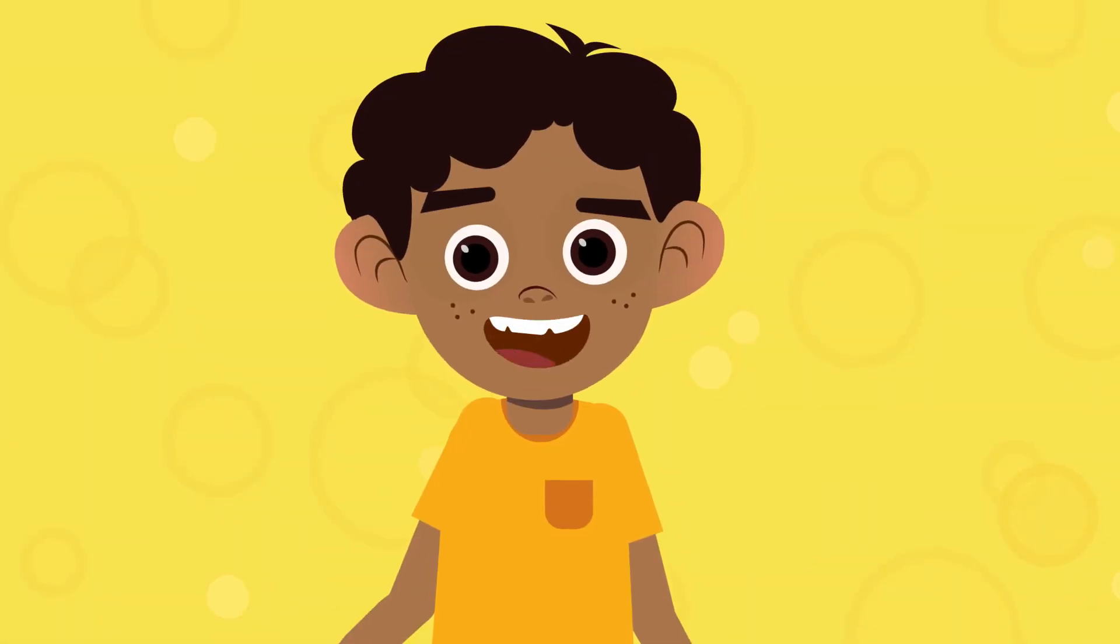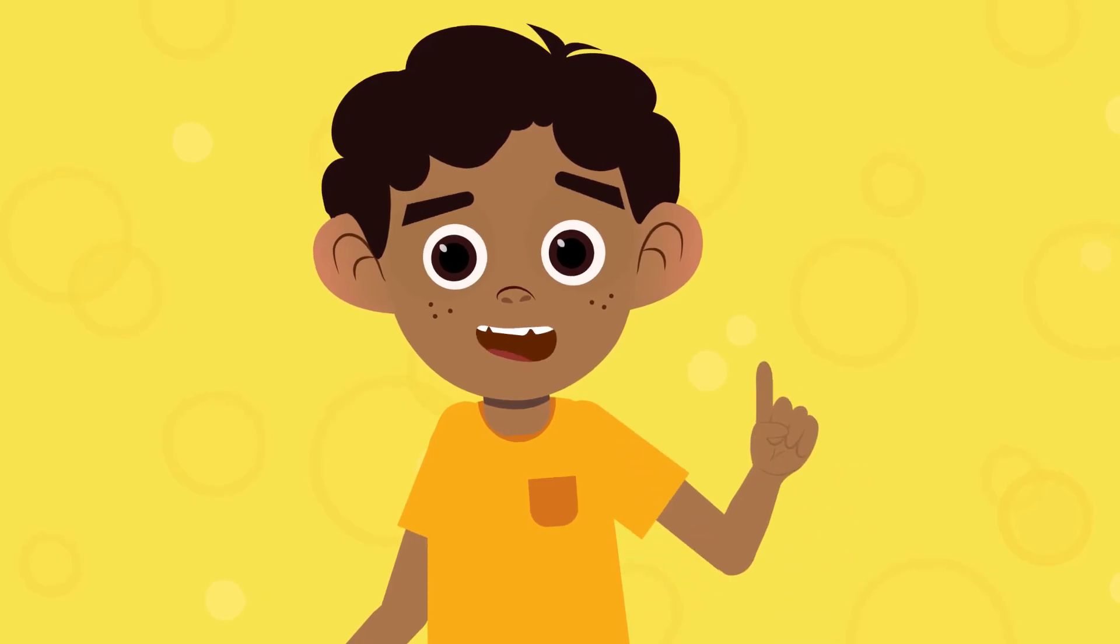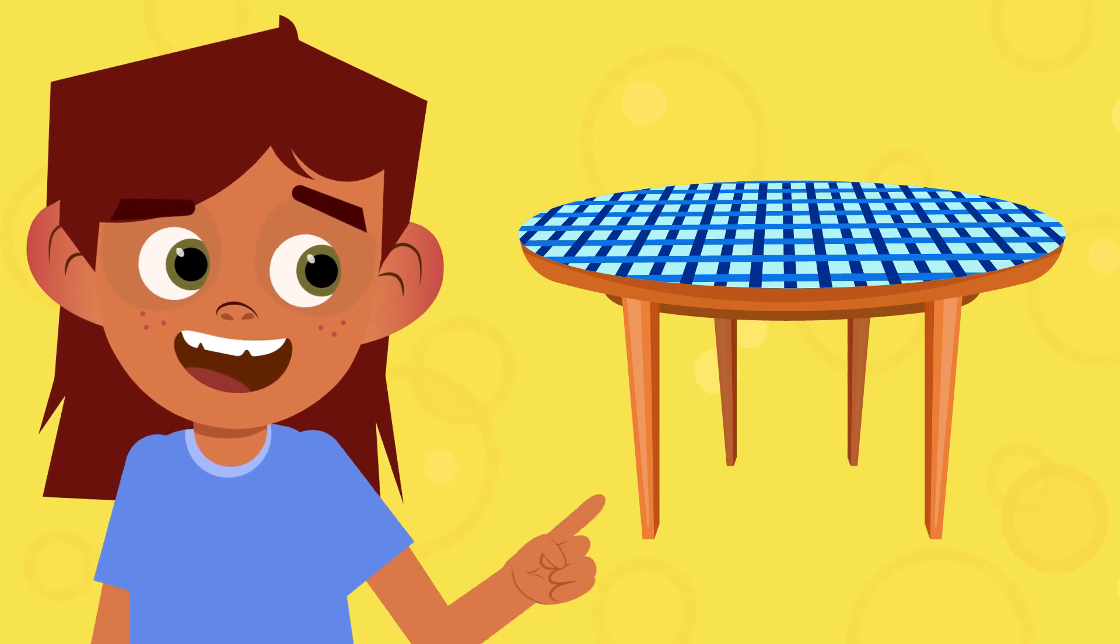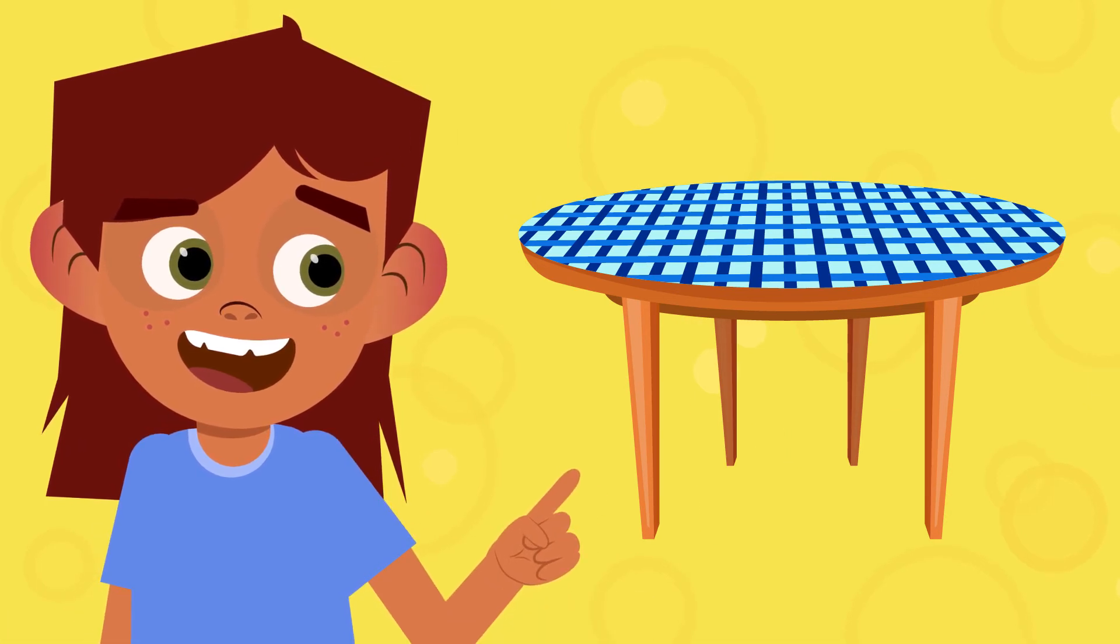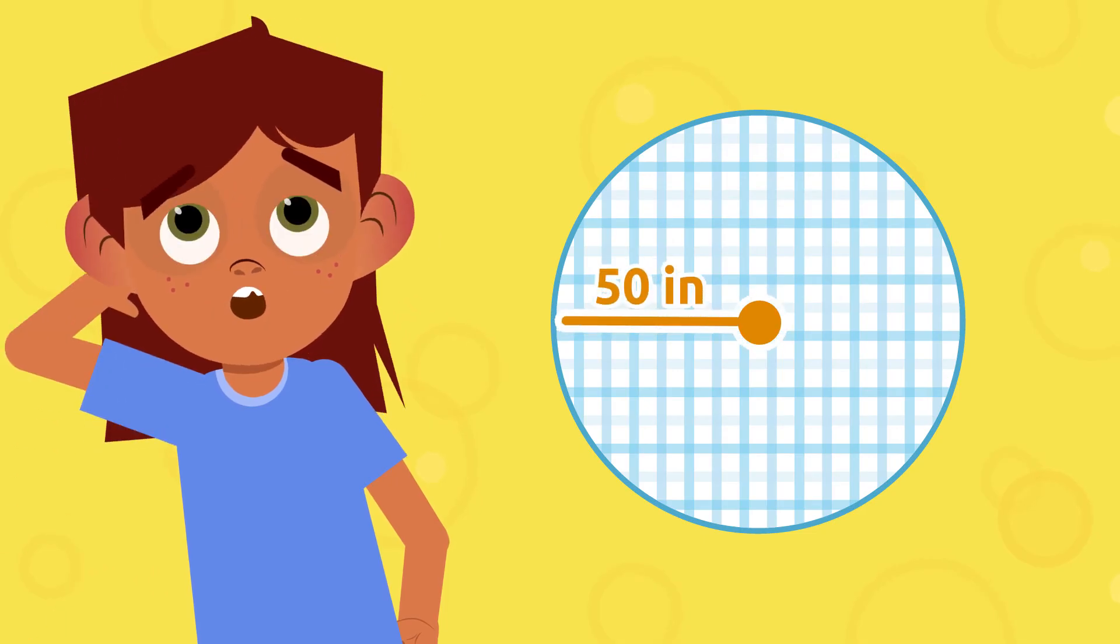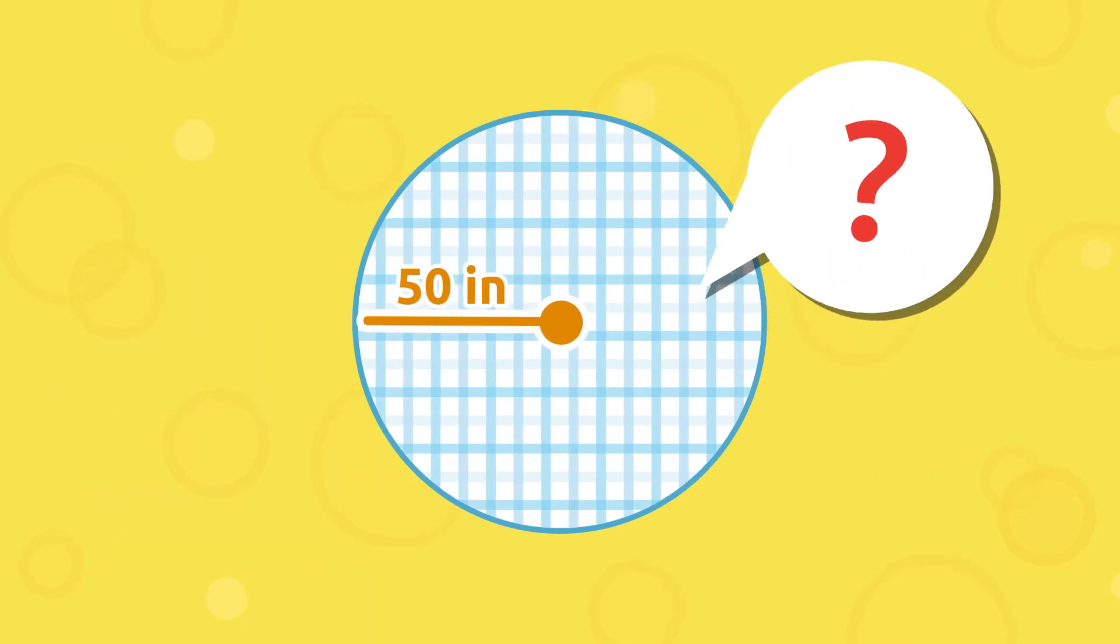It's very important to know how to measure the area of a circle. Let's look at an example. Anna wants to buy fabric to make a new tablecloth. The table is round and its radius measures 50 inches. How much fabric will she need?